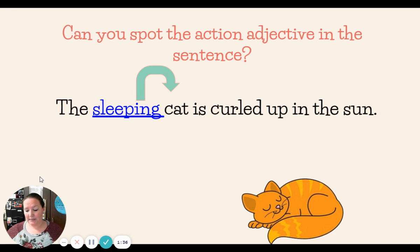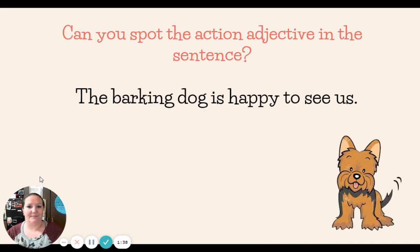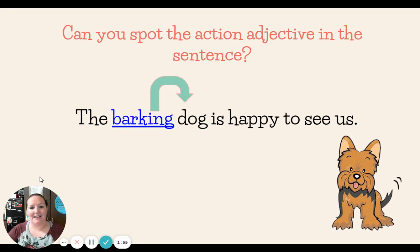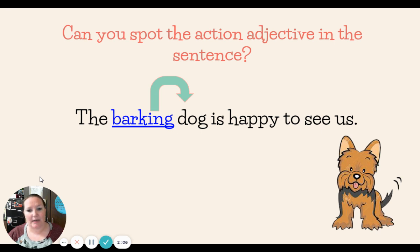Sleeping describes the cat. How about this next one? Can you spot the action adjective in the sentence? The barking dog is happy to see us. Mrs. Davis took a verb and turned it into an adjective. It was the word 'barking.' Bark was the verb. I added -ing, describing the dog — right before the noun 'dog.' The barking dog.